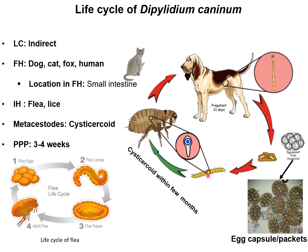An important point to remember: the larval stages of the flea are infected by ingestion of the eggs, not by the adult flea directly. This is due to differences in the mouth parts — the larval mouth part is chewing type, whereas the adult mouth part is piercing type, which does not allow ingestion of eggs.